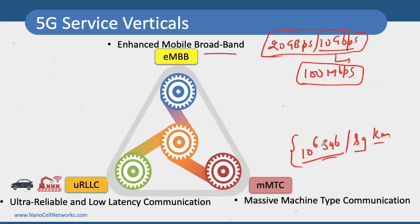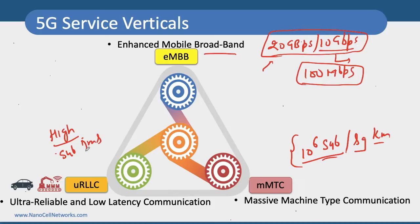In case of URLLC, data rates are not that important. What is more important here is ultra reliability — a highly reliable network — and very low latency, sub-1 millisecond latency, where we are expecting latency of 1 millisecond or less.